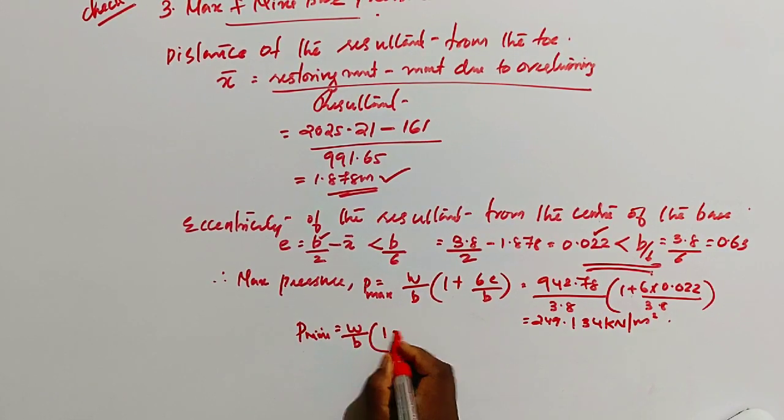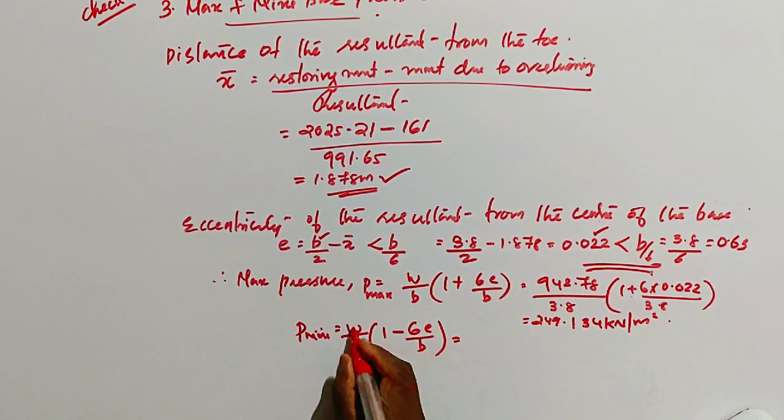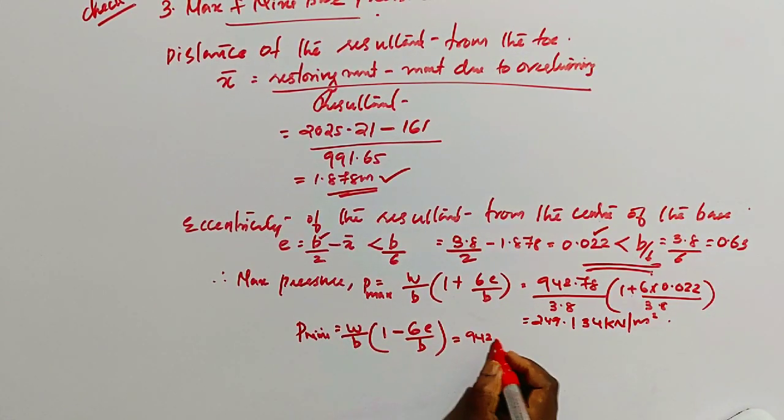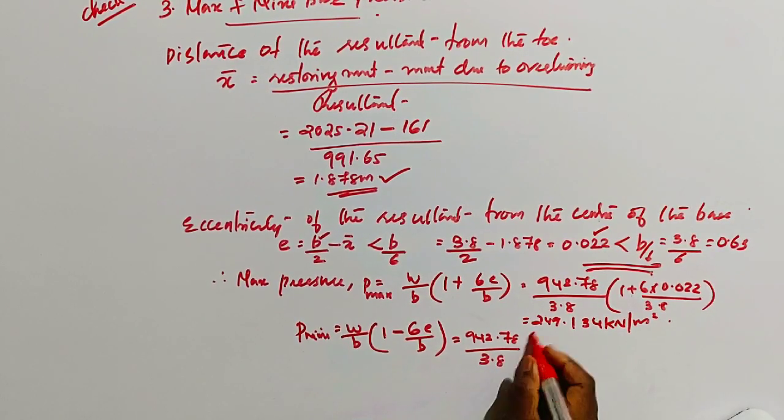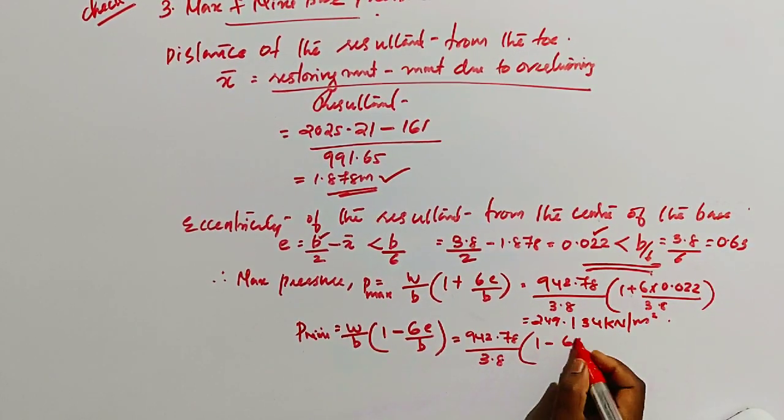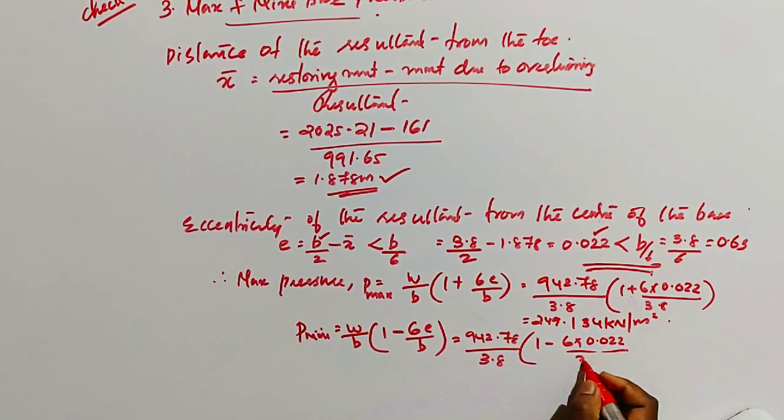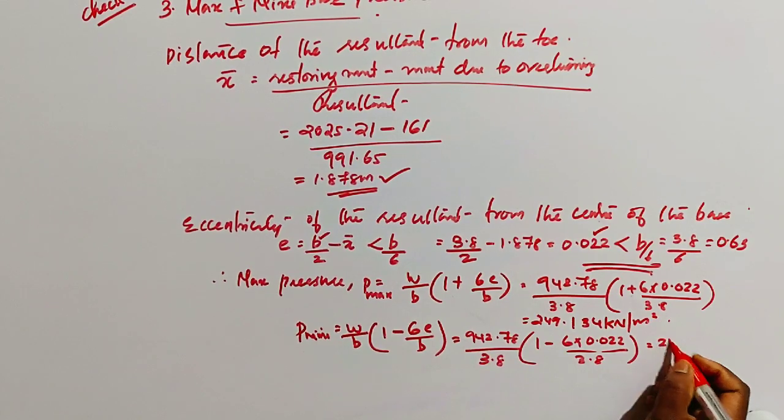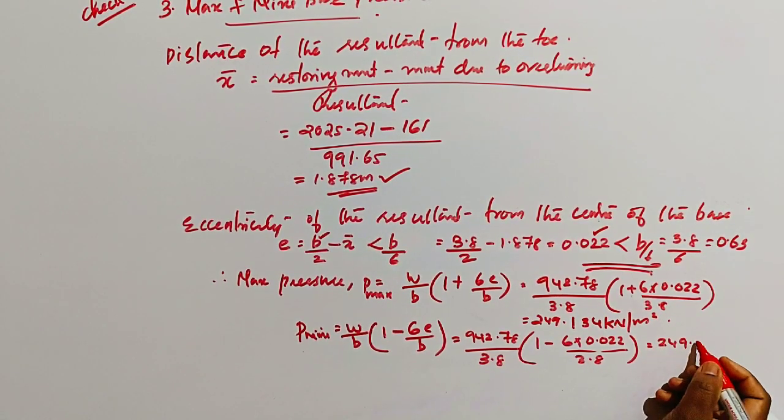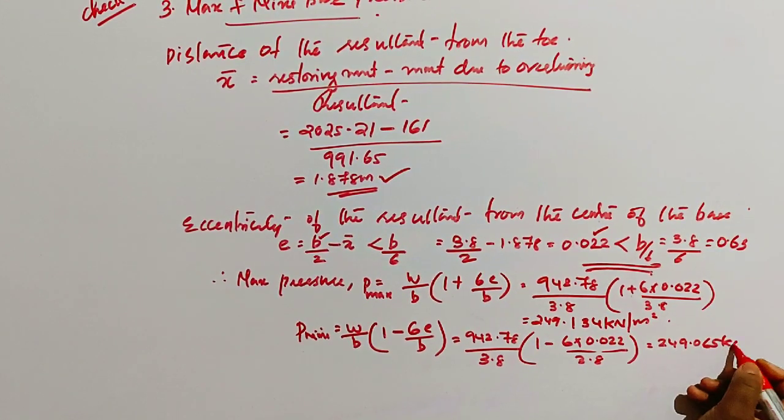Then minimum base pressure P minimum equal to W by B into 1 minus 6E by B. Substitute the value of W, B, and E: 942.78 divided by 3.8, 1 minus 6 times 0.022 divided by 3.8. Then the answer is 249.065 kilonewton per meter square.